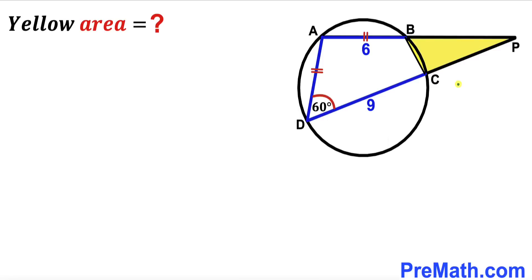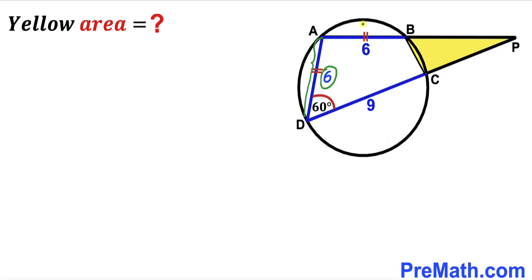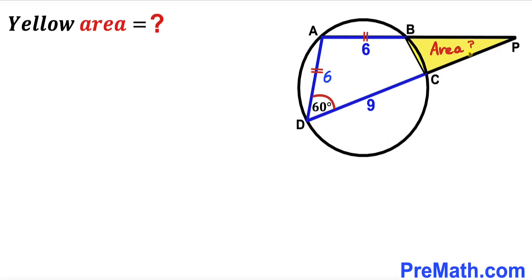In this video we have got this triangle ADP and this circle put together as you can see in this diagram, such that this big triangle ADP consists of this cyclic quadrilateral ABCD and this yellow shaded triangle BCP. Moreover, segment AB is 6 units and segment AD is equal to segment AB, so therefore segment AD is 6 units as well, segment CD is 9 units, angle ADC is 60 degrees, and our task is to calculate the area of this yellow shaded triangle BCP.